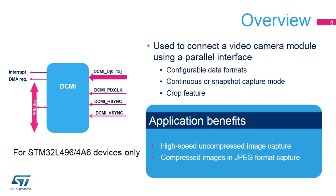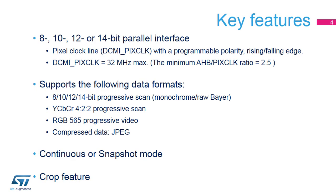With the crop feature, the camera interface can cut and store a rectangular portion of the received image. The camera interface has a configurable parallel data interface with 8 to 14 data lines, together with a pixel clock line, DCMI-PIX-CLK, with a programmable polarity and rising/falling-edge configuration.